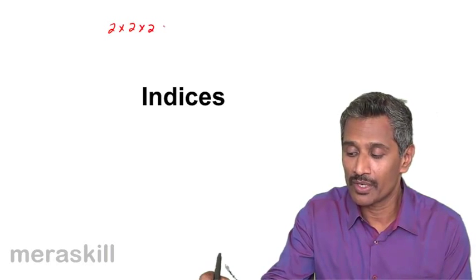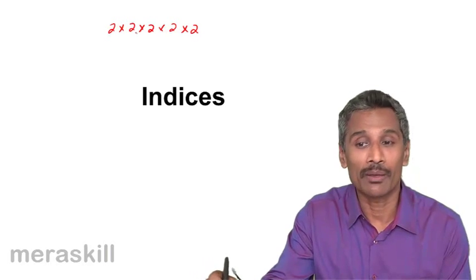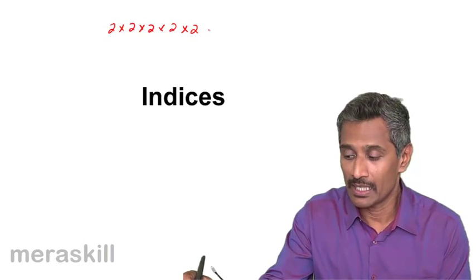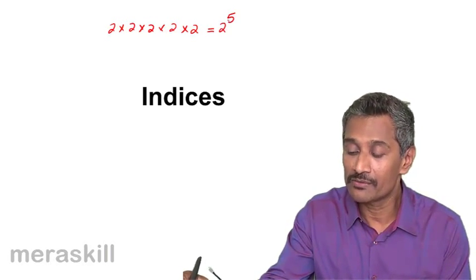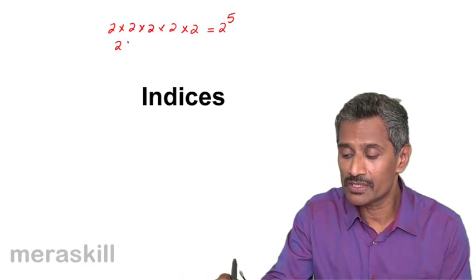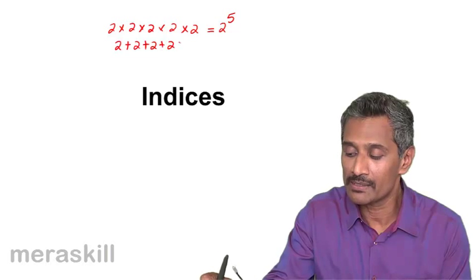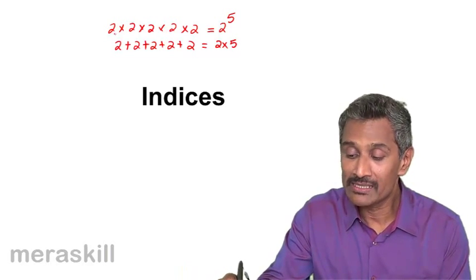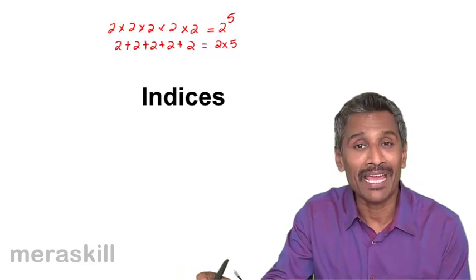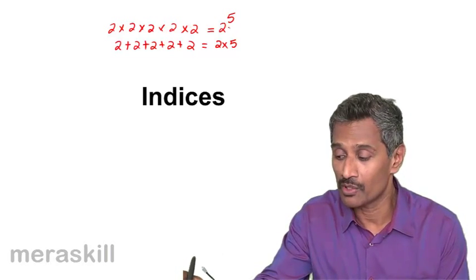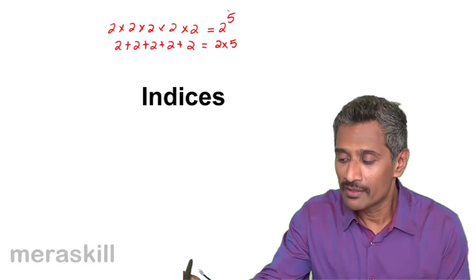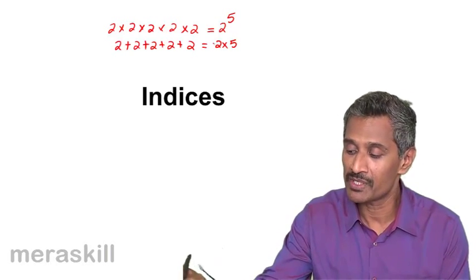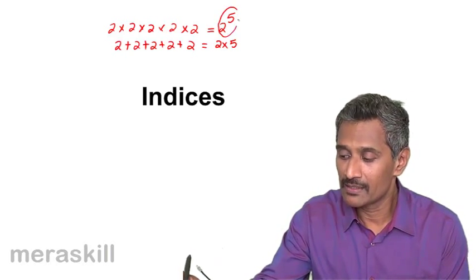Say you have two into two into two into two into two — we are multiplying two, one two three four five times. So this is the same as writing two raised to five. On the contrary, suppose you say two plus two plus two plus two plus two plus two, you write this as two into five. When you multiply a number by itself n number of times, we write this as a number raised to n. This is what we call the concept of indices — basically the multiplication of a term.